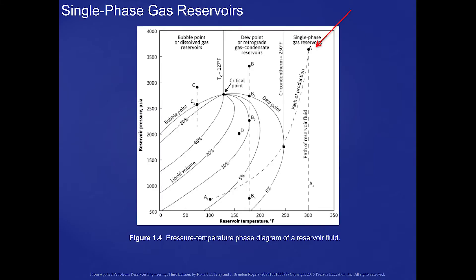There might be some liquid that will be produced on the surface as the gas is brought through the production pipe and then into the separating systems. But when we refer to single-phase gas reservoirs, we're talking about what remains in the reservoir. This figure shows that — it's to the right of the Cricondentherm, and so a constant temperature process is what we have during the production phase in the reservoir itself, and it will stay as a single-phase gas.